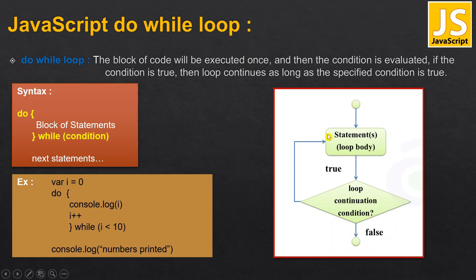Let's analyze the flowchart for the do-while loop. The statement body is executed first, no matter whether the condition is true or false — do, it will do it. After executing once, the condition is checked. If the condition is true, control goes back and the block of statements executes again. This process repeats until the condition becomes false, at which point control comes out of the loop and executes the next statements.